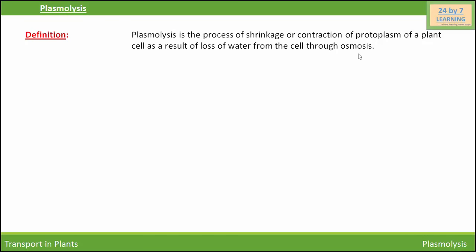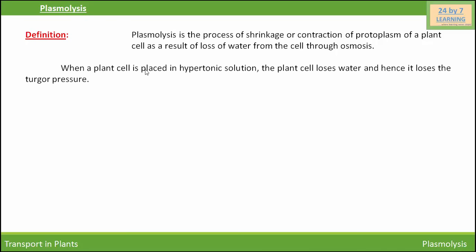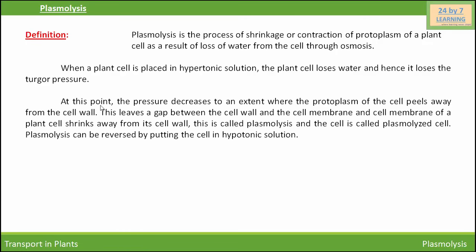We can induce plasmolysis by placing a plant cell in a hypertonic solution. When a plant cell is placed in a hypertonic solution, the plant cell loses water and hence it loses the turgor pressure. At this point, the pressure decreases to an extent where the protoplasm of the cell peels away from the cell wall. This leaves a gap between the cell wall and the cell membrane, and the cell membrane of the plant cell shrinks away from its cell wall.